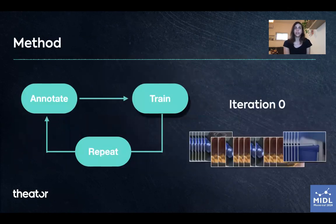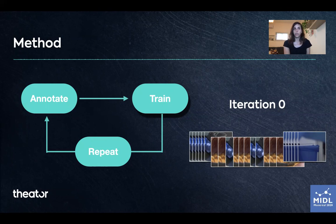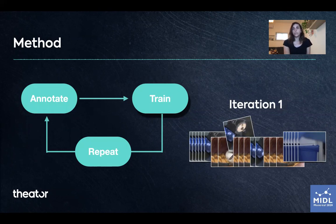Our method starts from a noisy dataset and iteratively applies semi-supervised learning to re-annotate the training data. To create the initial dataset, we annotated only the actual start and end point of the procedure, which is a much easier task. So all frames before and after these points are considered as out-of-body frames. We resampled the training set at each iteration, using 100 new videos each time, and did several iterations to optimize the results.